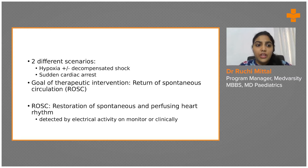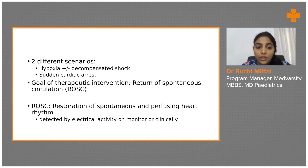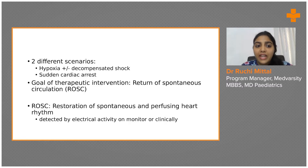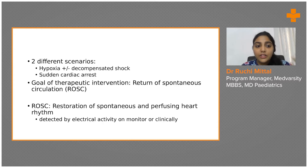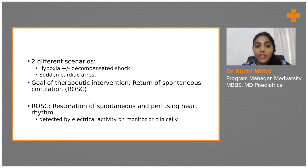In children there are two different scenarios. Unlike adults, where it is mostly a sudden cardiac arrest, in children the most common cause is hypoxia with or without decompensated shock. The other cause is sudden cardiac arrest, which is due to ventricular tachycardia (VT), ventricular fibrillation (VF), or pulseless electrical activity (PEA). But the main cause — I repeat — is hypoxia with or without decompensated shock.